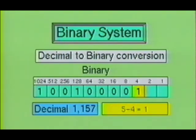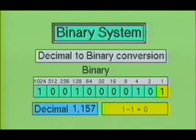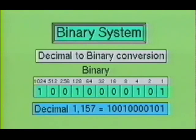Our next bit value of 4 can be subtracted from a remainder of 5, leaving a new remainder of 1. Since we used the bit value of 4, we place a 1 in this column. We cannot subtract 2 from a remainder of 1, so we place a 0 in the 2 column. Our final bit value is 1, and we have a remainder of 1, so we place a 1 in this column. As you now see, the binary equivalent of the decimal number 1,157 is 10010000101.